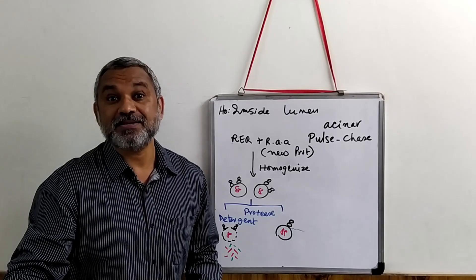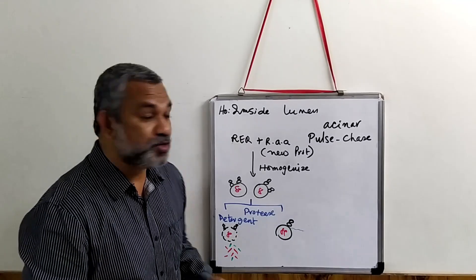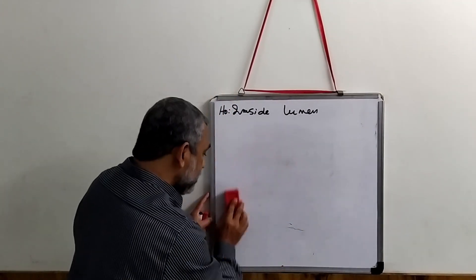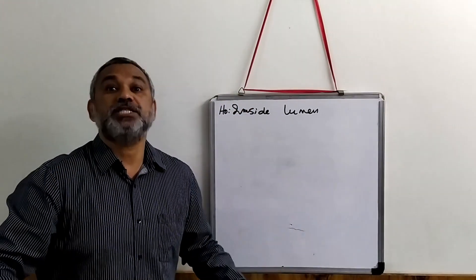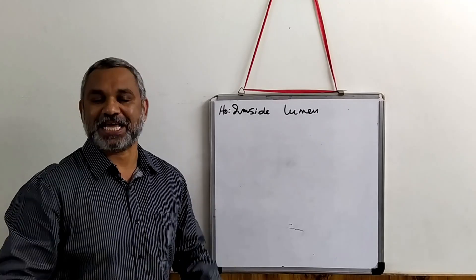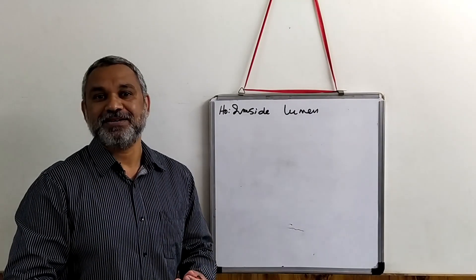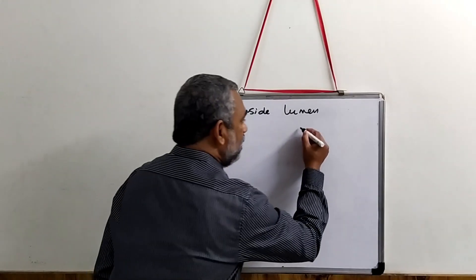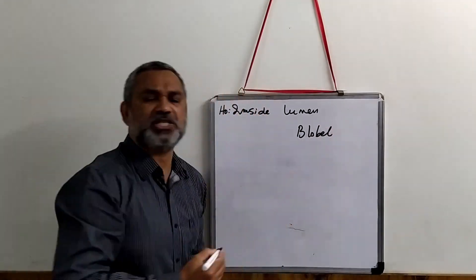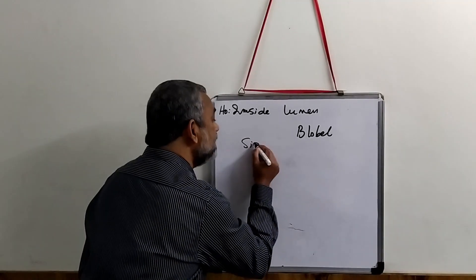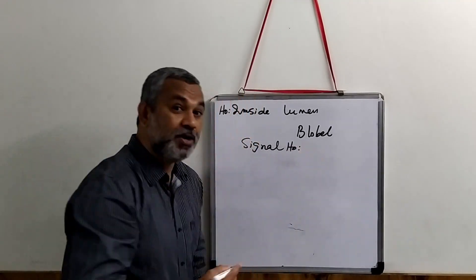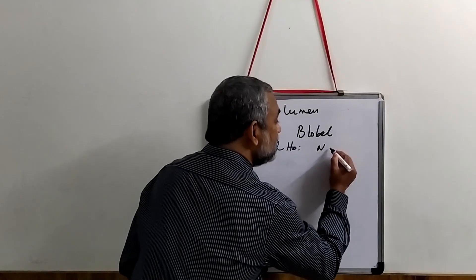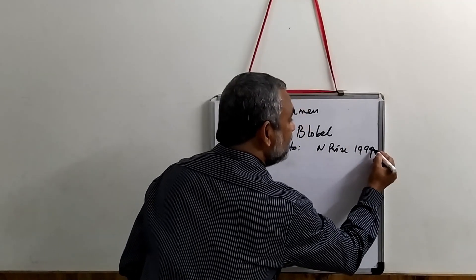This brought up a second question: if the protein is inside the lumen, how does it get transported there? This question was answered by the famous scientist Günter Blobel. In the 1970s, Blobel proposed the Signal Hypothesis, for which he was awarded the Nobel Prize in 1999.